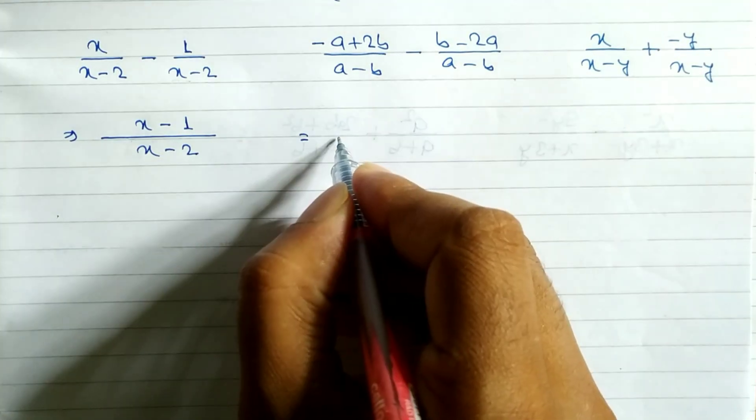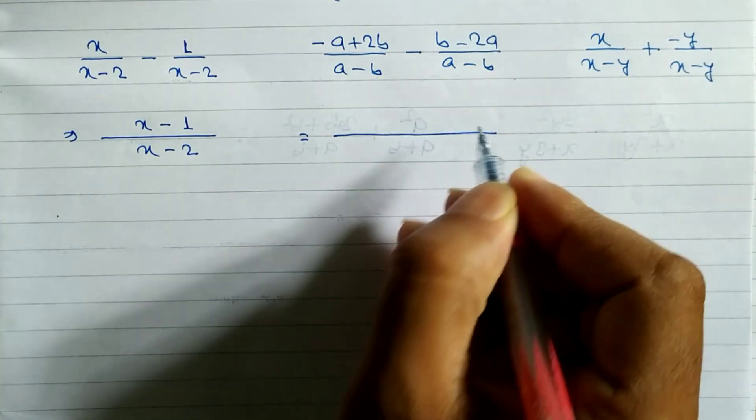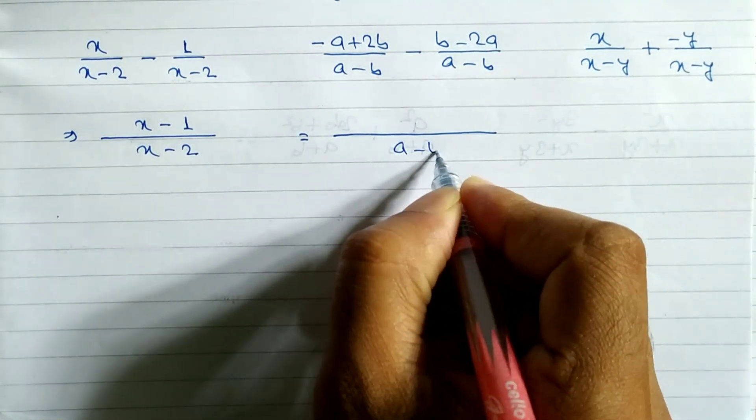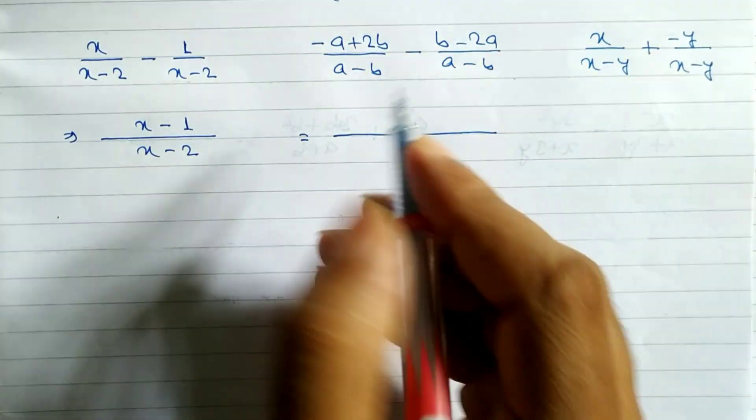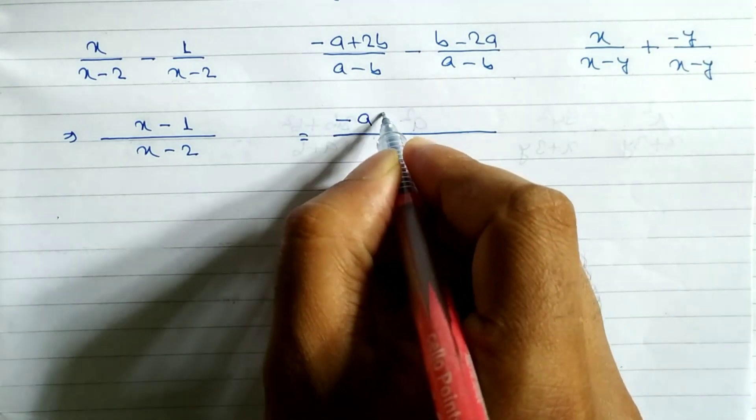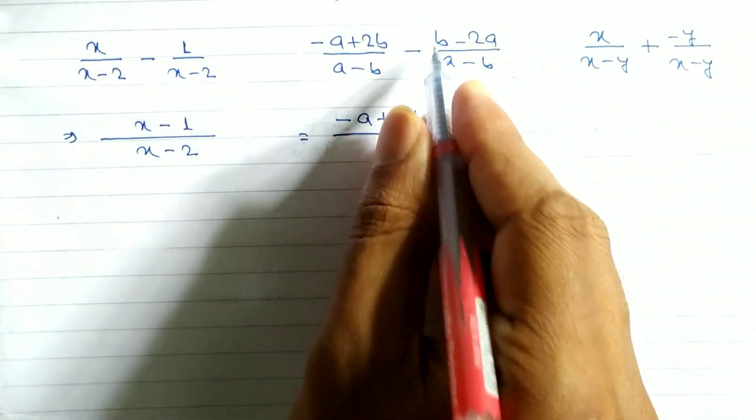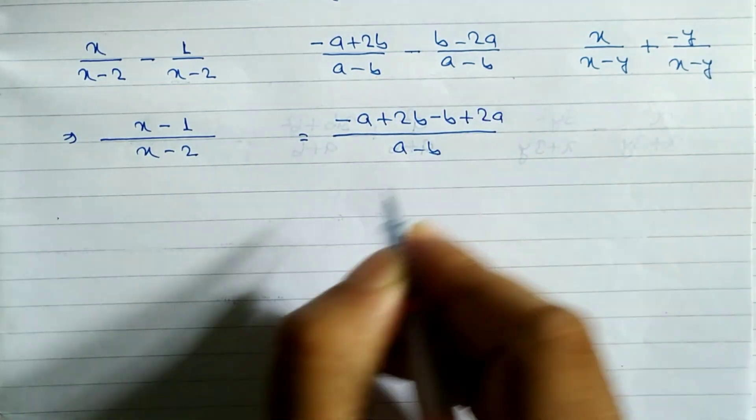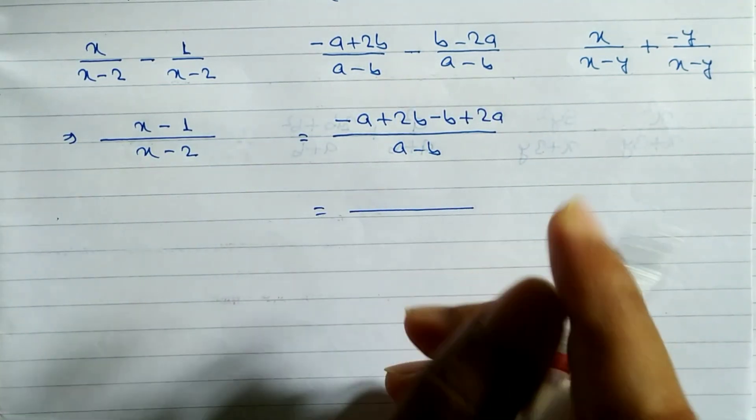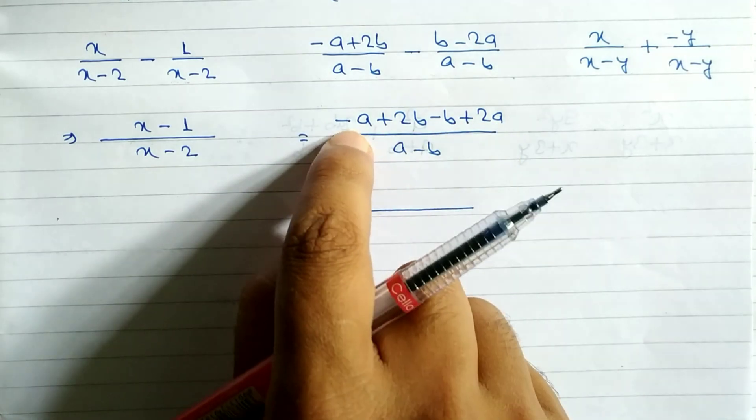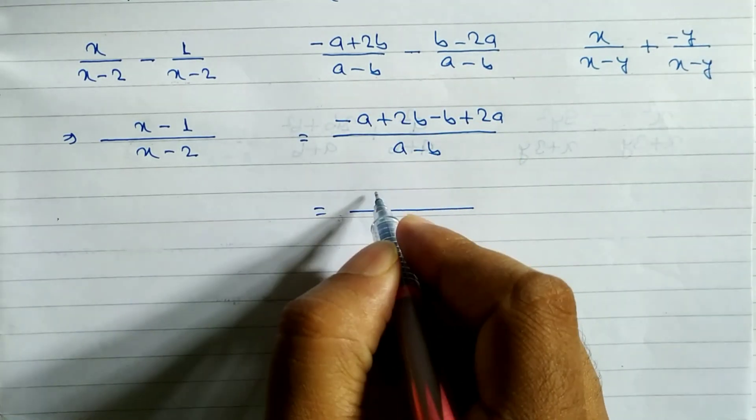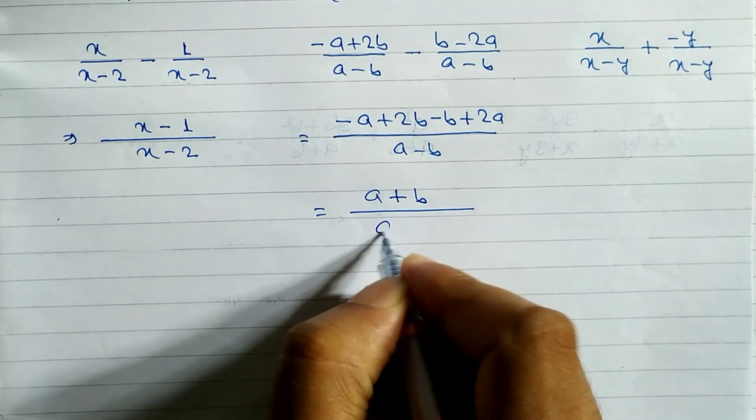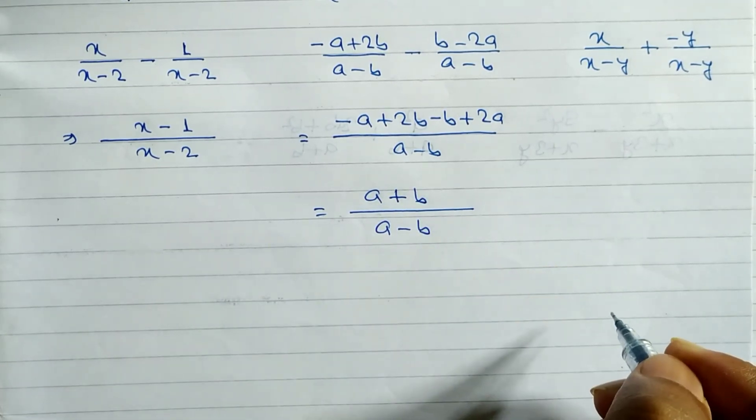Look at this one. Here we have to take LCM. You can see in the denominator a minus b, a minus b. So we write a minus b. Just write down the numerator. So we write negative a plus 2b minus b minus 2a. Now we solve this. The like terms are 2a and negative a: 2a minus a equals a. And 2b minus b equals b. So we write b by a minus b as the answer.